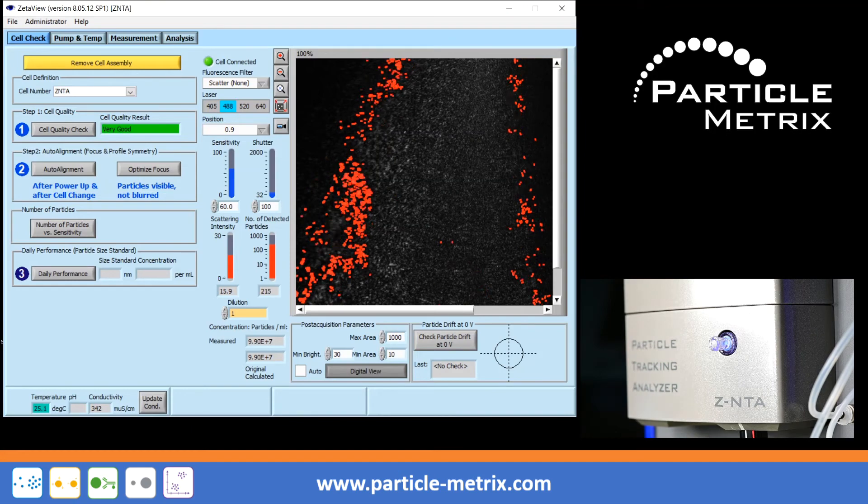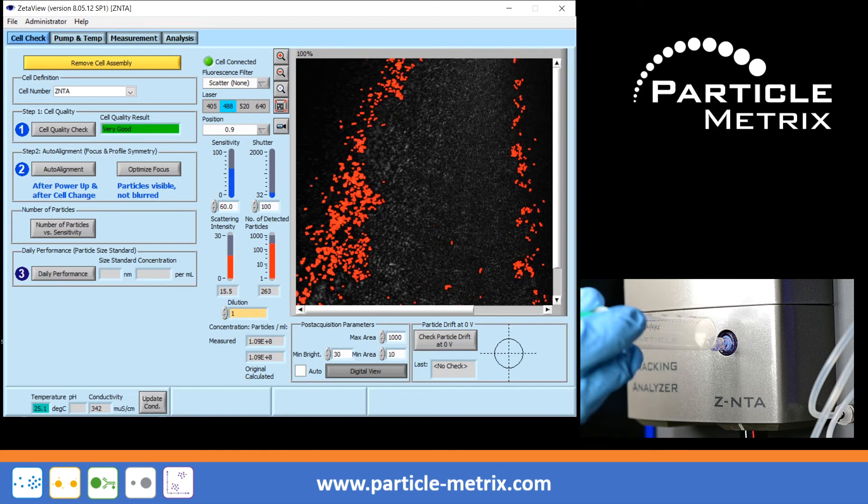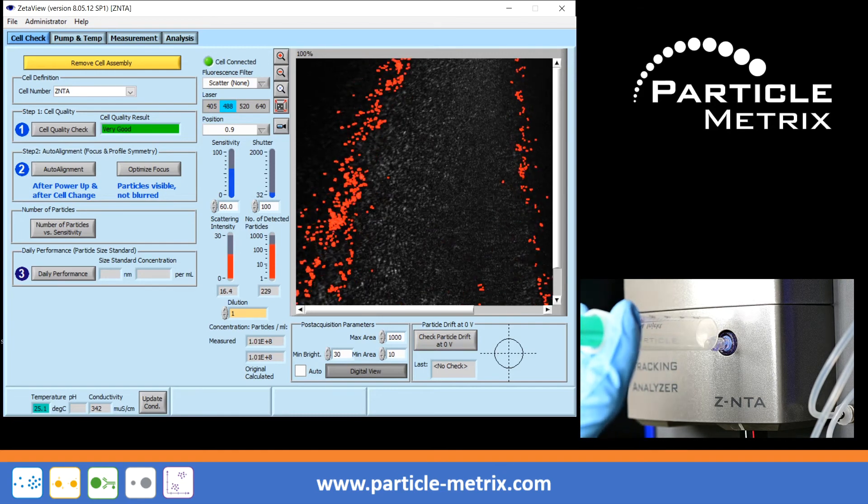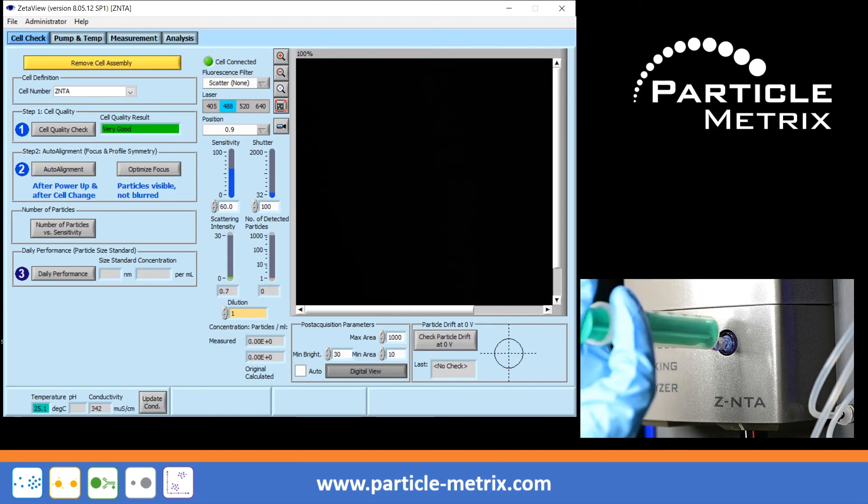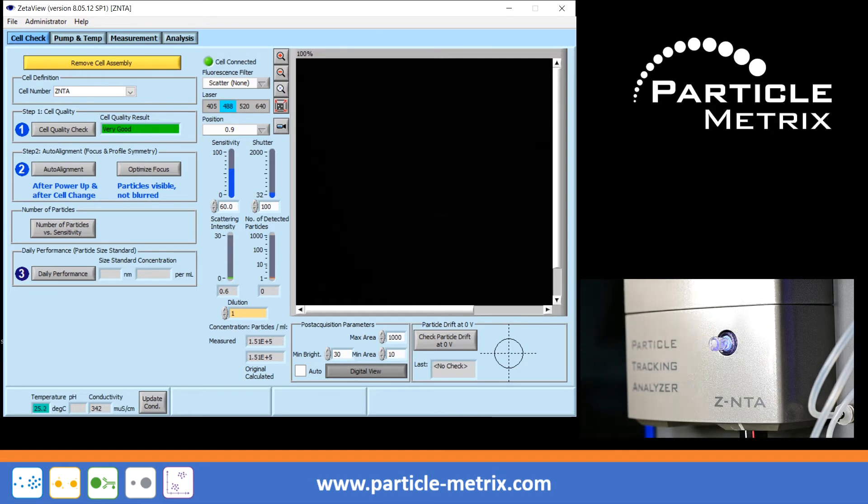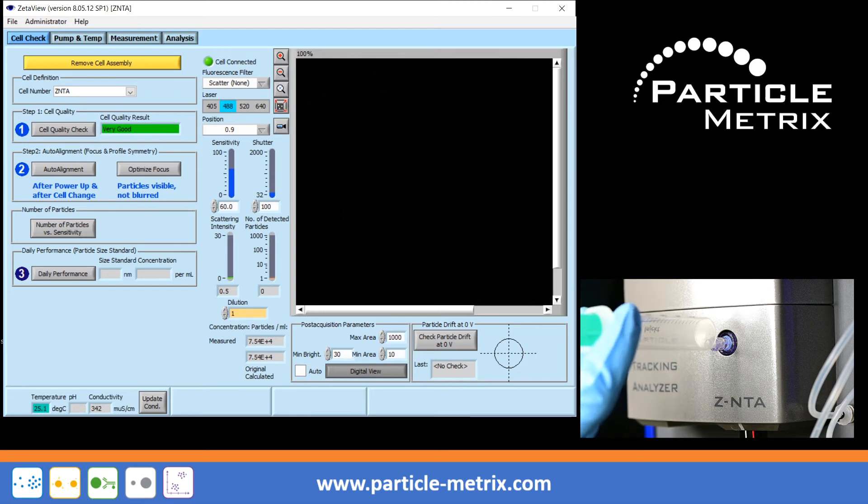However, if the air bubble extends over all measuring positions and it cannot be removed, remove the sample from the fluidic system by first injecting 10-20 ml of air with an empty syringe. Unfortunately, you will lose the sample in this way.